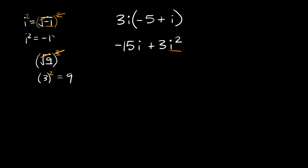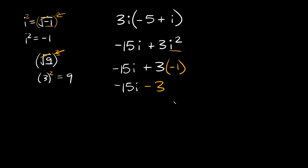So since we know that i squared is equal to negative 1, we can rewrite this one more time as negative 15i plus 3 times negative 1. So then here we really have negative 15i minus 3. And remember you always want your answers in standard form — the real number first and then the imaginary number second. So we're going to write our answer as negative 3 minus 15i.